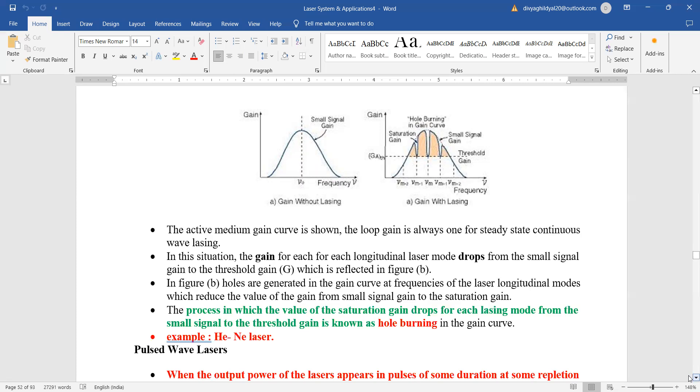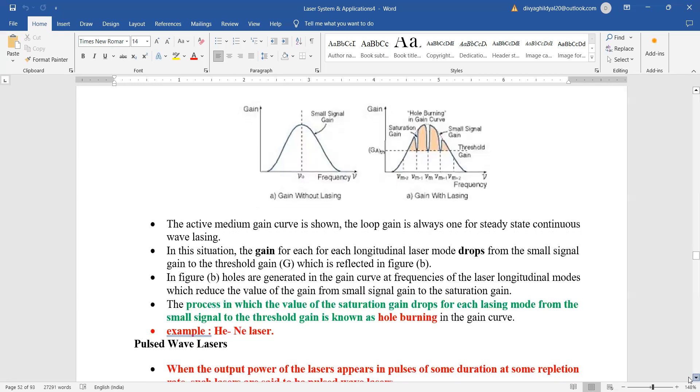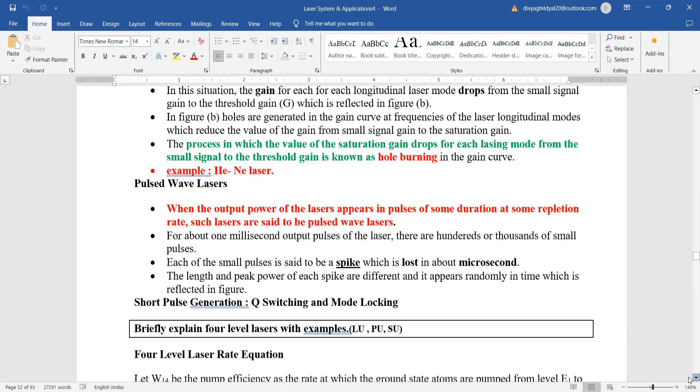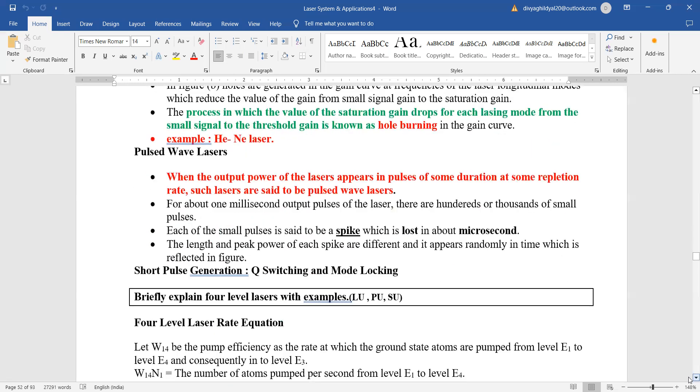This is known as hole burning in the gain curve. So best example of this is helium-neon laser. Pulsed wave—you can just pick up ruby laser and explain it in detail. Ruby laser gives output in the form of pulses.